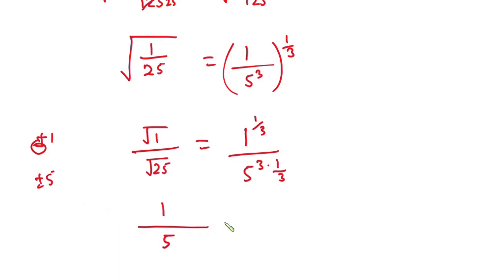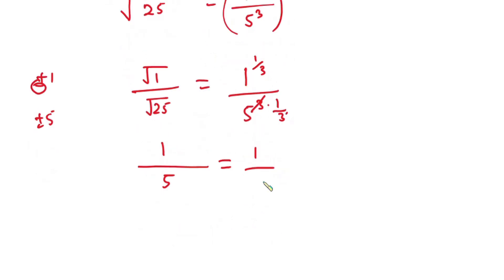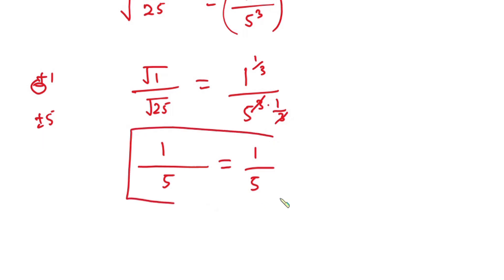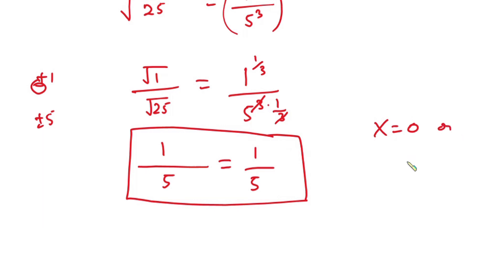The powers cancel, so the right hand side is also 1 over 5. You can see that the left hand side equals the right hand side, so we can conclude that x equals 0 or x equals 1 over 125 both satisfy the equation.